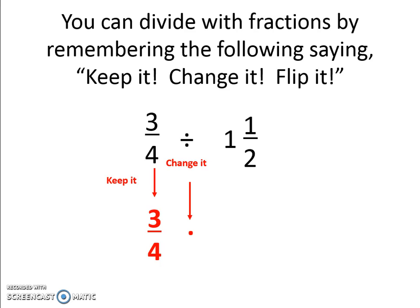But before I can flip one and one half, and as we talked about in the last video, to take the reciprocal of a mixed number, I need to turn that mixed number into an improper fraction. So two times one is two, plus one is three. So I get three over two.